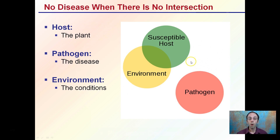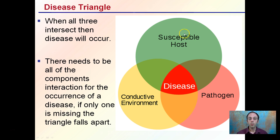What happens when all three of these come into intersection with one another? When all three are present at the same time, you get this scenario that develops, and this is where disease will occur. When all these intersect, that's where you're getting that triangulation and the disease that forms. There needs to be all three components interacting for the occurrence of a disease. If only one is missing, then the triangle will simply fall apart.